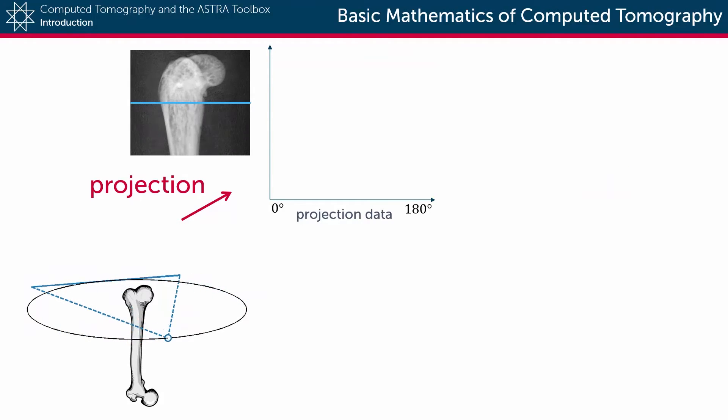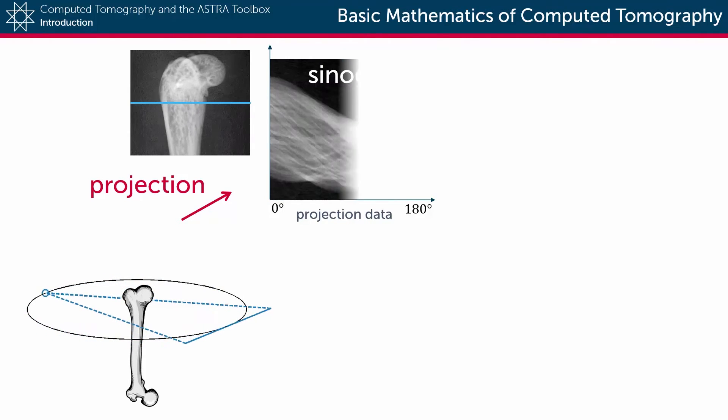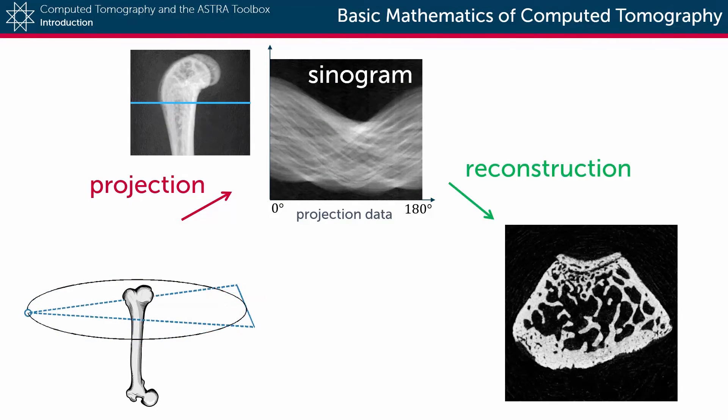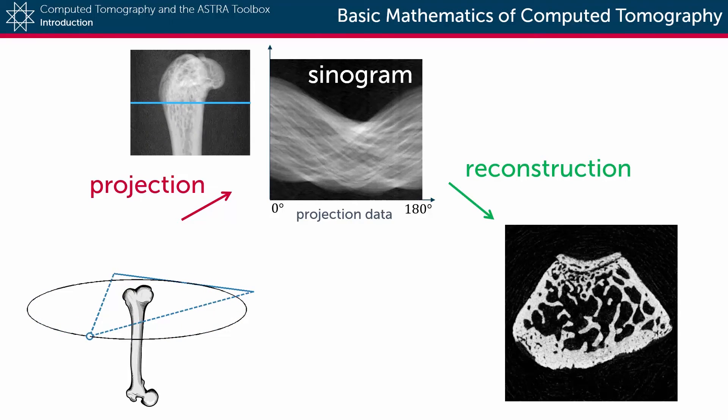The tomographic principles remain exactly the same, but instead of a series of two-dimensional projection images, each projection is now a one-dimensional vector. If you put all of these projections next to each other, you can see all the projection data in one single image. This is called the sinogram.